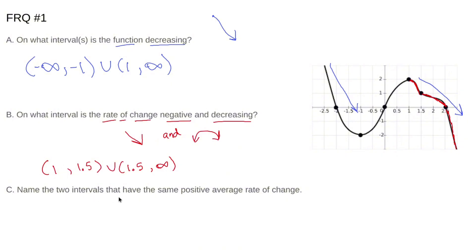Name the two intervals that have the same positive average rate of change. Now, average rate of change means slope between two points if we're looking at a graph.